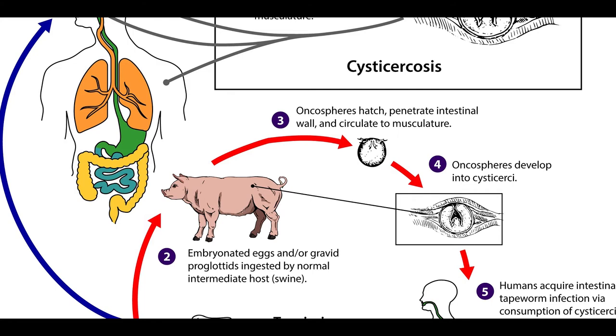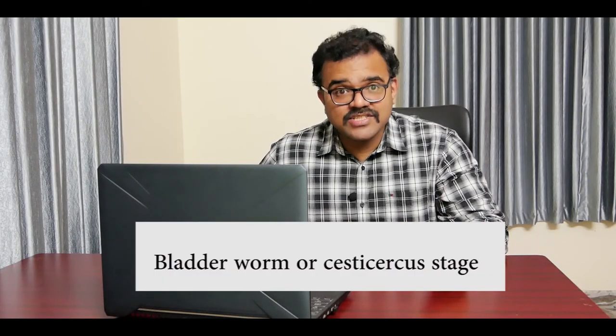Within the intestine of the new host, the hexacanth embryos are released and they penetrate into the gut wall, finally reaching the bloodstream and ultimately settling down in the muscles. In the muscles, the embryos give rise to the bladder worm or cysticercus stage.